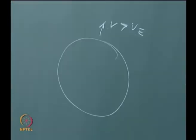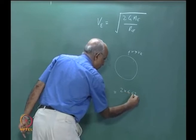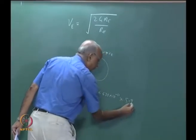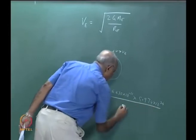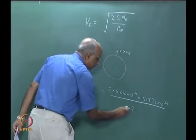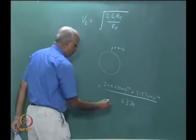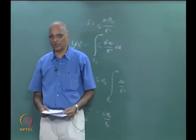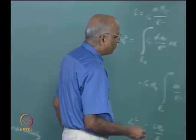Let us calculate the value. The escape velocity from the surface of the earth equals 2 times gravitational constant 6.670×10⁻¹¹ N·m²/kg², times mass of the earth 5.974×10²⁴ kg, divided by radius of the earth 6,378×10³ meters. This works out to be something like 11.17 kilometers per second.